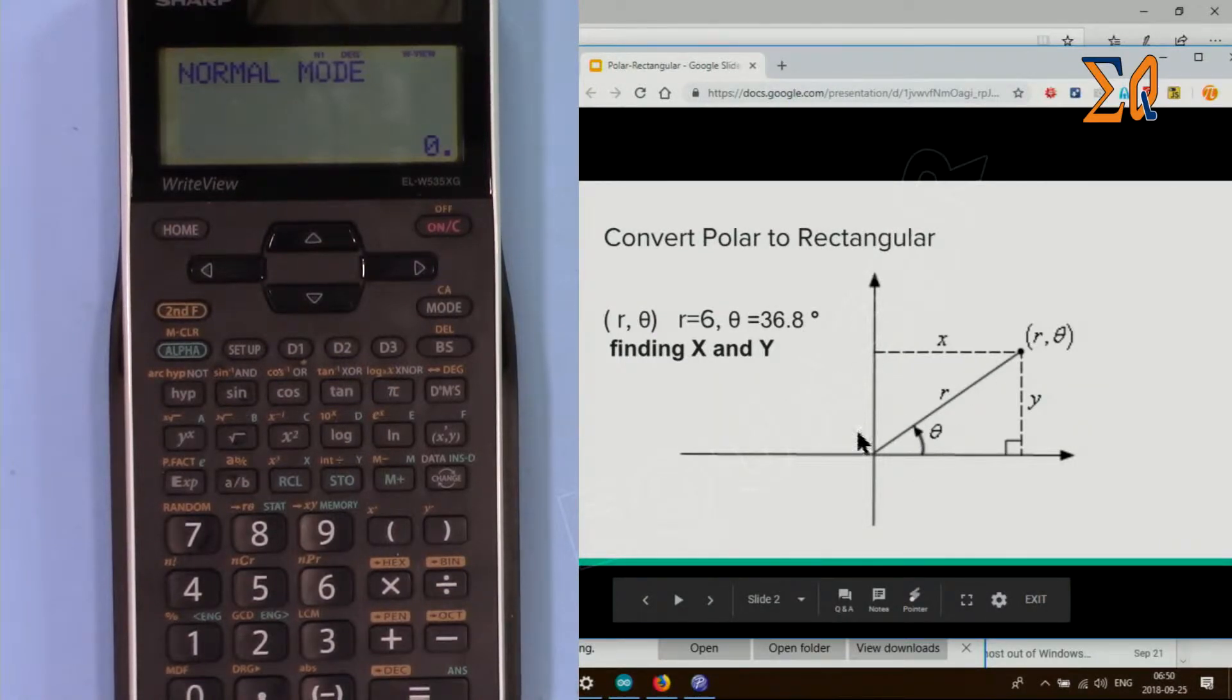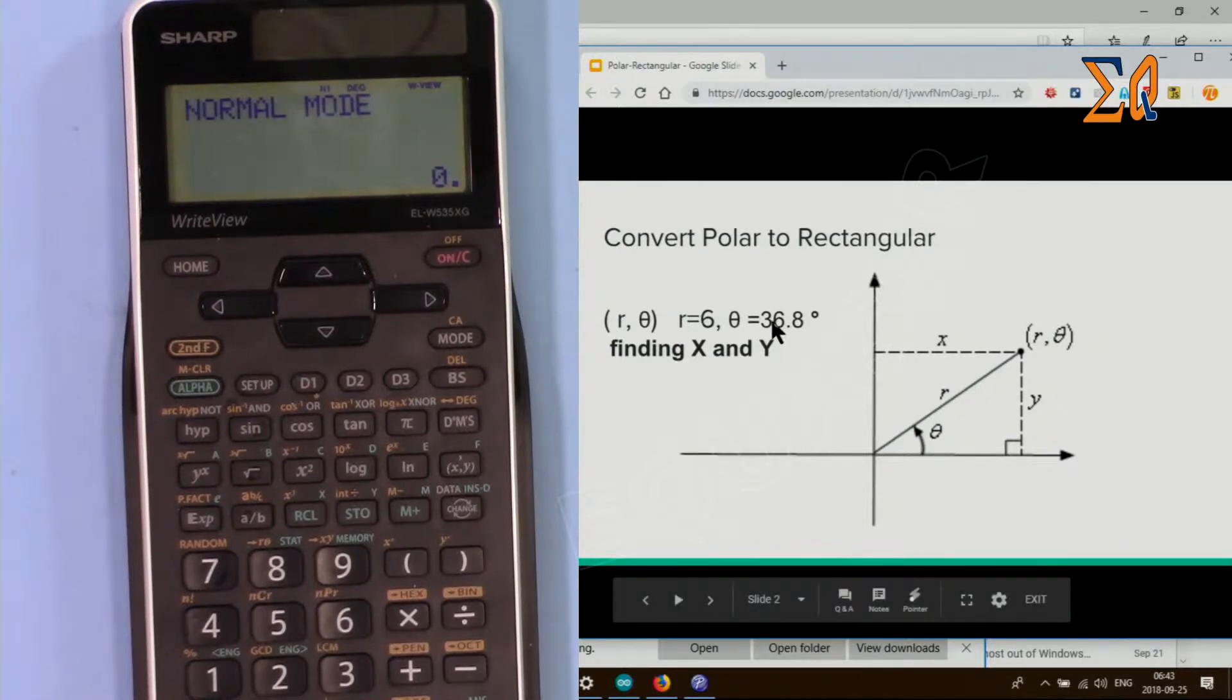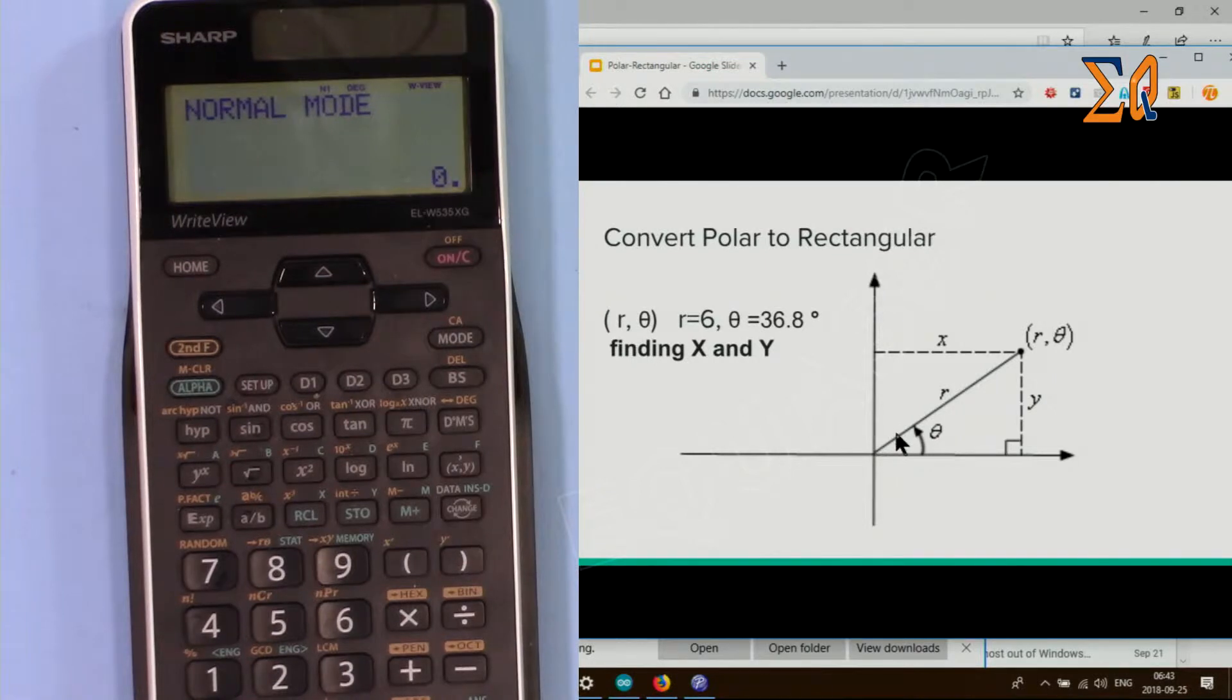For Cartesian, we find a point in X and Y. Usually you'll have a magnitude - let's say R is 6 and the angle from the reference is 36.8°. So you have two values and you want to find X and Y of this coordinate.